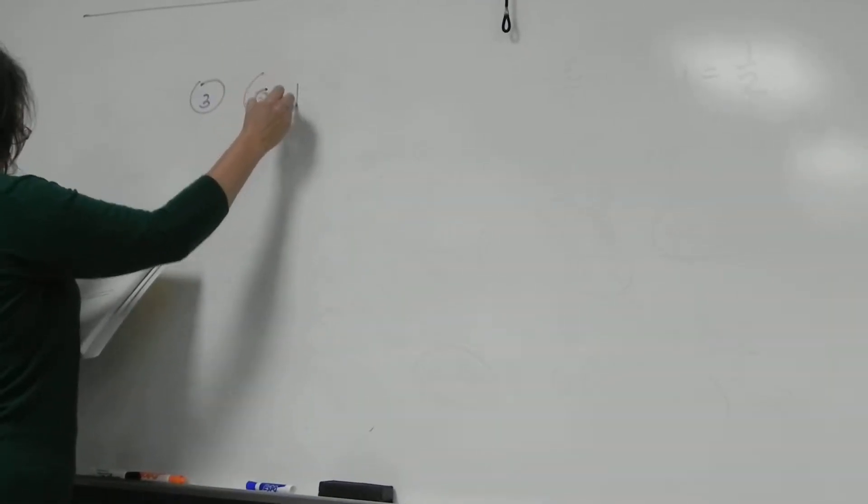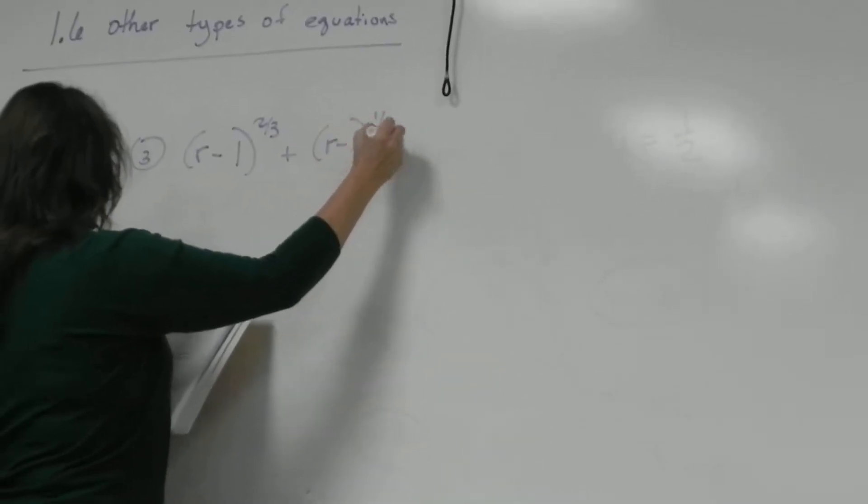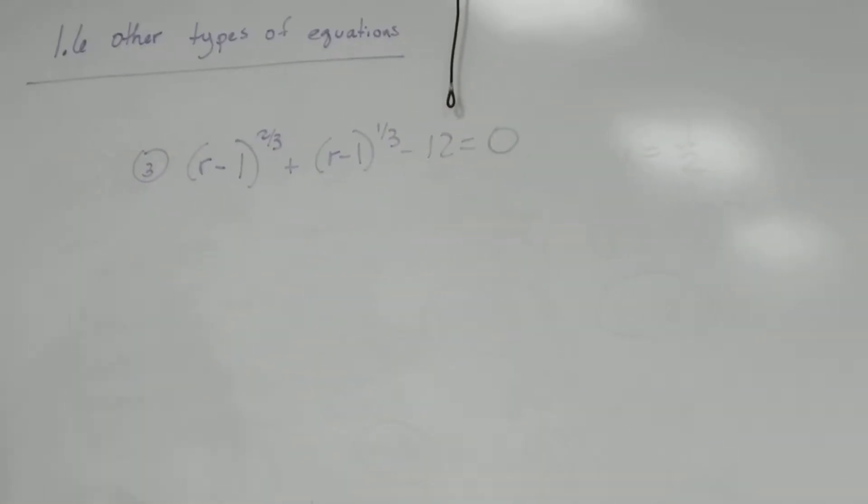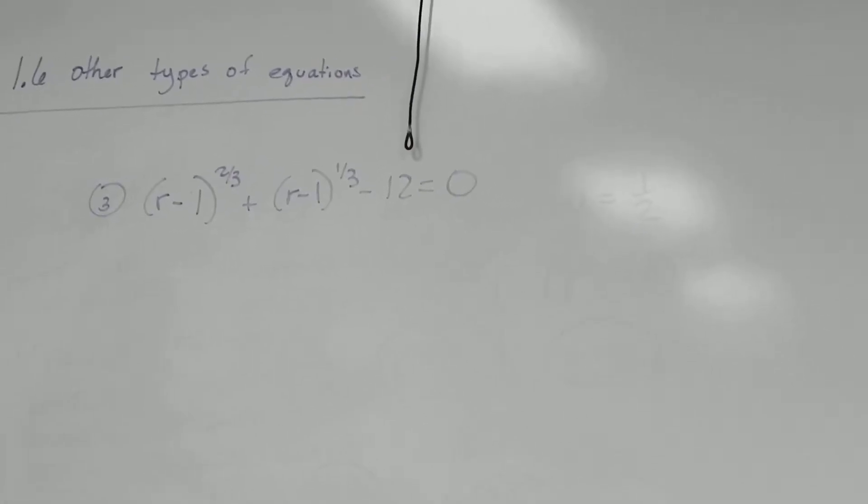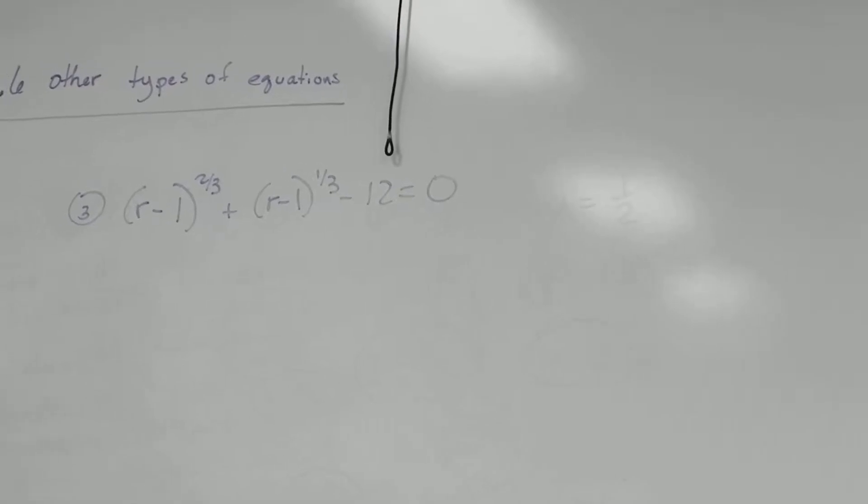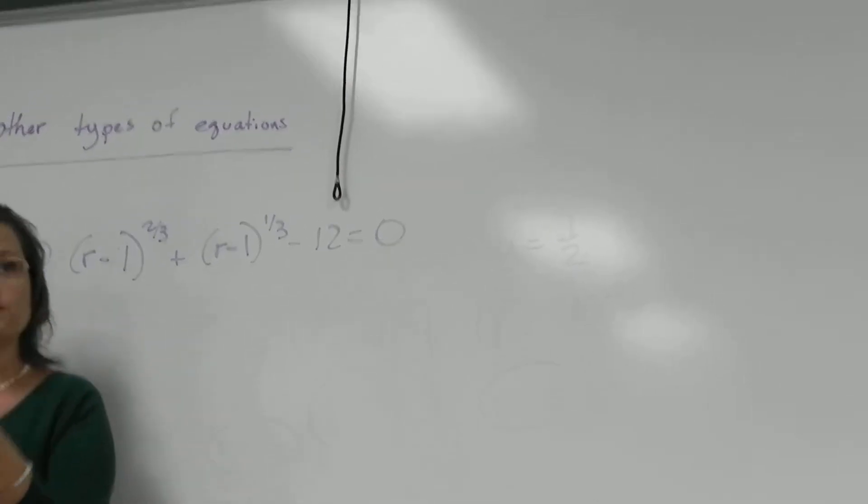It should say (r-1)^(2/3) + (r-1)^(1/3) - 12 = 0. Definitely ugly algebra if you were going to try to work that with those fractions and crazy exponents. That would be hard to do otherwise, which we do have a method for doing in radicals, which we're going to talk about next. But notice that some of your problems are just set up naturally for this.